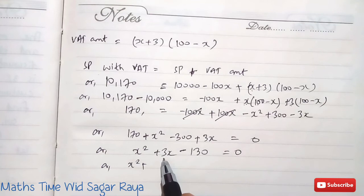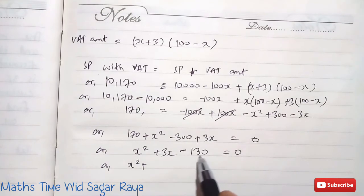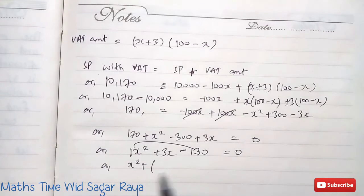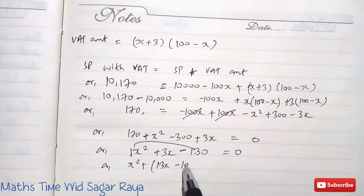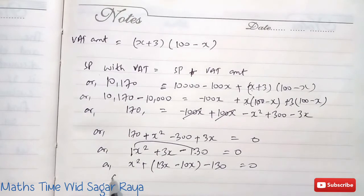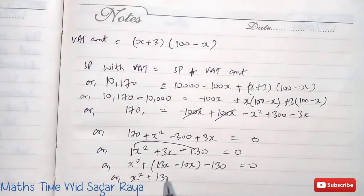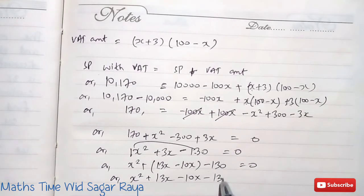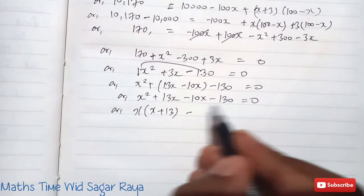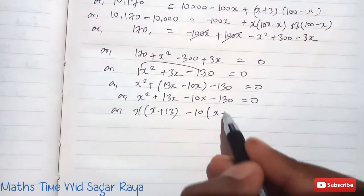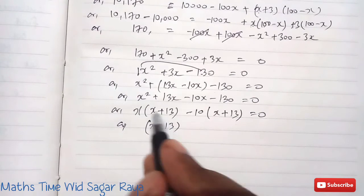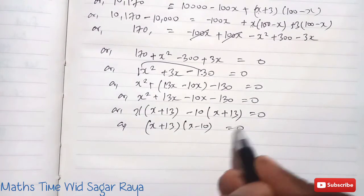To factorize X squared plus 3X minus 130, we need two numbers that multiply to 130 and subtract to 3: that is 13 and 10. So we write X squared plus 13X minus 10X minus 130. Taking X common from first two terms gives X(X+13), and taking minus 10 common from last two gives minus 10(X+13). So the factored form is (X+13)(X minus 10) equals zero.